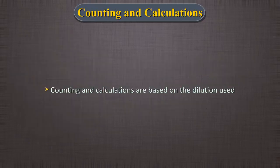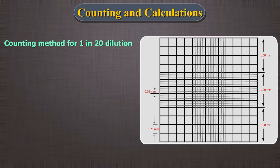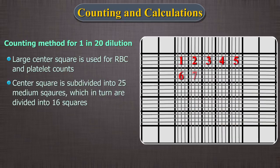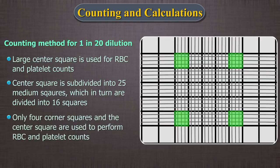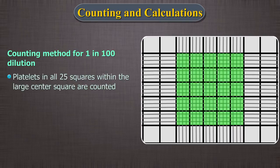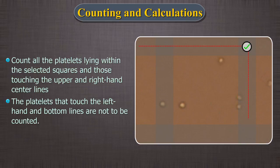Counting and calculations are based on the dilution used. A. Counting method for 1 in 20 dilution: the larger center square is used for RBC and platelet counts. This area is subdivided into 25 medium squares, which in turn are each divided into 16 squares. Usually 5 squares — the 4 corner squares and the center square — are used to perform RBC and platelet counts. B. If using 1 in 100 dilution, use the entire large center square to count the platelets; platelets in all 25 squares within the large center square are counted. C. Count all platelets lying within the selected squares and those touching the upper and right-hand center lines. Platelets that touch the left-hand and bottom lines are not to be counted.